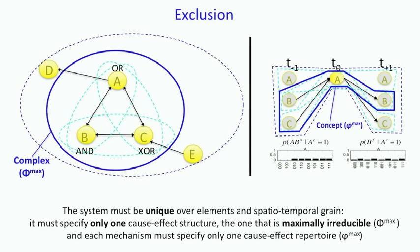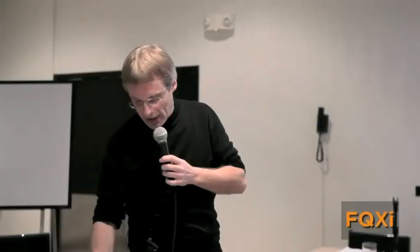We apply the same logic to the sub-mechanism within the system. So A, for instance, could have several kinds of cause-effect repertoire, but we cannot accept the idea that you can multiply causes, that you can have many things causing the same effect. So there is only one cause and that is the most irreducible cause. There's a lot more to be said about that, but at least that's the idea.